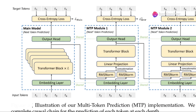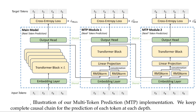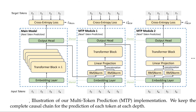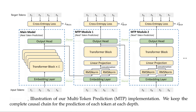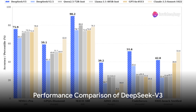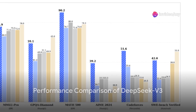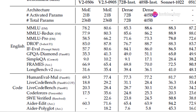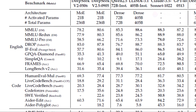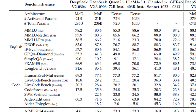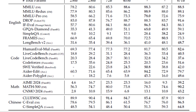Techniques like multi-token prediction and knowledge distillation from previous DeepSeek models also contribute to its improved performance. Benchmarked against other leading LLMs, DeepSeek V3 holds its own.